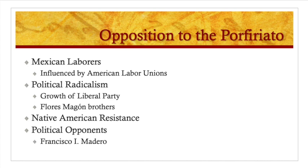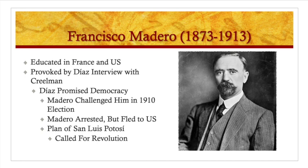There was also Native Mexican resistance, and political opponents included people like Francisco Madero. Madero was a political man who was wealthy and a landowner — not from the Native American side — but he identified with many other people. He and his family were friends with the Porfirio Díaz family, so this was an internal political struggle. Needless to say, Díaz had made a lot of opponents.